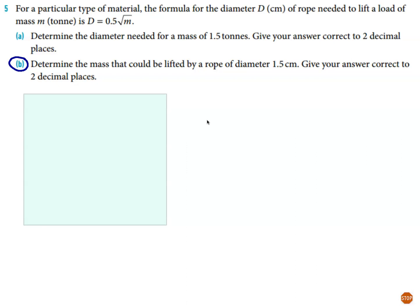load of mass M in tons is given by this formula D equals 0.5 square root of M. Determine the mass that could be lifted by a rope of diameter 1.5 centimeters, and round your answer to two decimal places. So stop the video and have a go please.